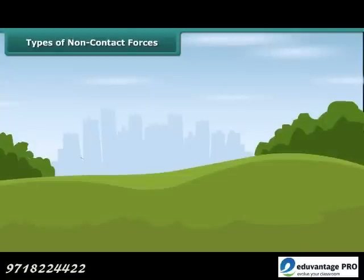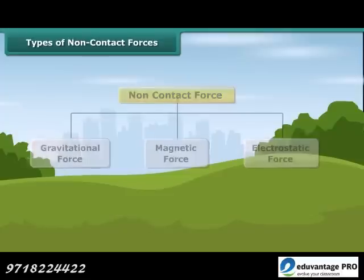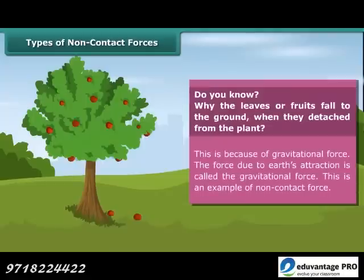The types of non-contact forces are gravitational force, magnetic force, and electrostatic force. Why do leaves and fruits fall to the ground when they detach from the plant? This is because of gravitational force. The force due to the earth's attraction is called gravitational force, and this is an example of a non-contact force.